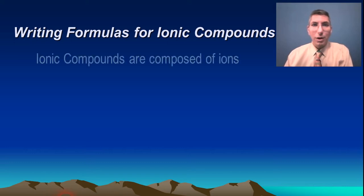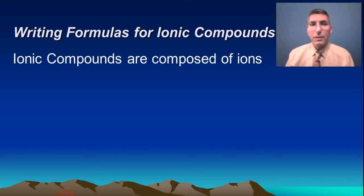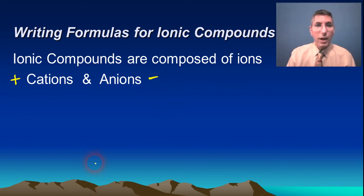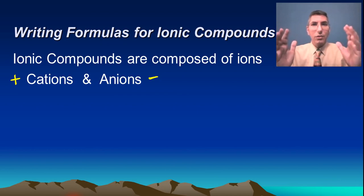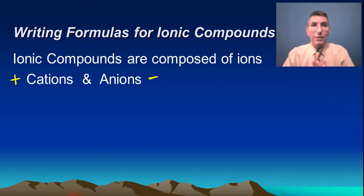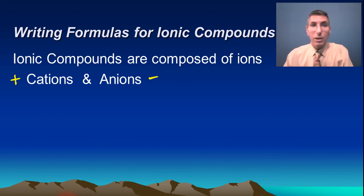Let's remember what ionic compounds are. When we say ionic compounds, we're talking about substances that are composed of ions — specifically cations and anions. Cations have a positive charge and anions have a negative charge. Opposite charges attract, so a positive and a negative charge are drawn to each other. These particles have what's called an electrostatic attraction, allowing ionic compounds to stick together with a fairly strong bond.